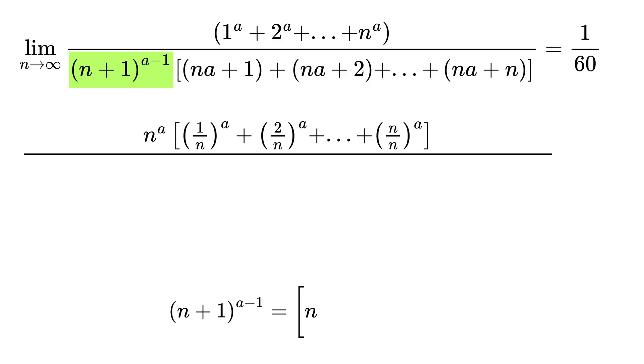Now consider this term. We can take n as common to get this as n times (1 plus 1 over n) whole raised to a minus 1. So we can rewrite this as n raised to a minus 1 times this raised to a minus 1.